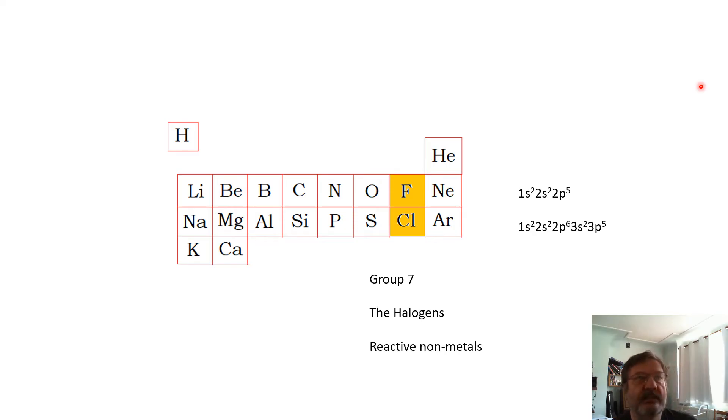Here, group seven: fluorine, chlorine, bromine, iodine. Group seven are called the halogens, and they are reactive non-metals. If we look, they have one electron missing, if you like, in their outer shell, or at least they've got room for one more electron in their outer shell.